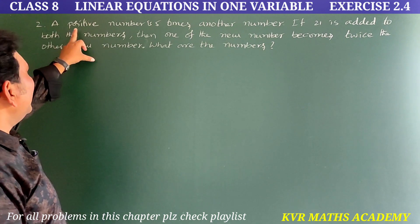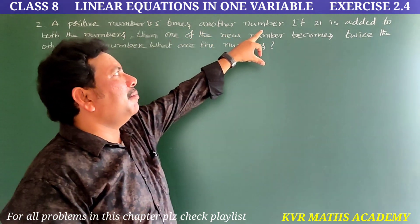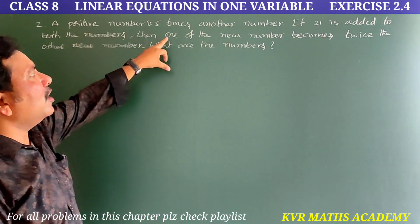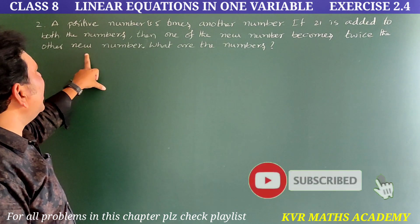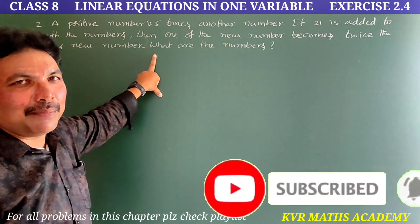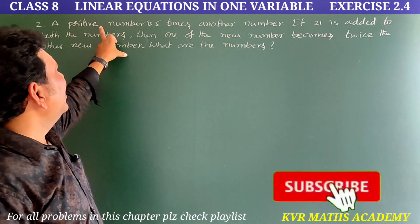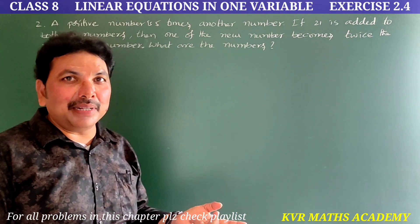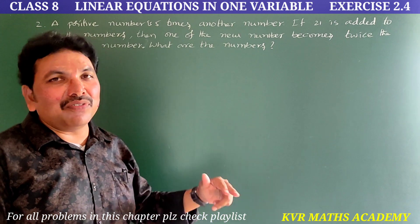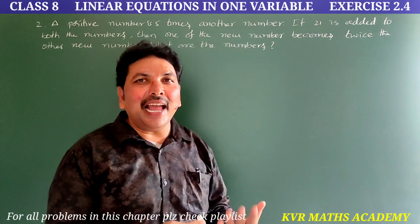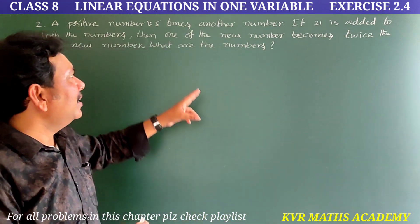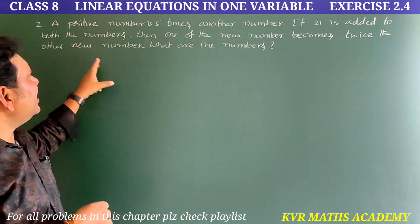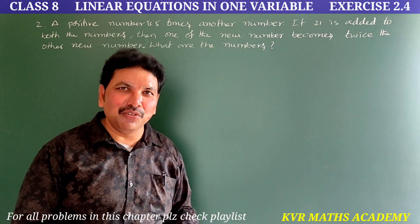Second question. A positive number is 5 times another number. If 21 is added to both the numbers, then one of the new numbers becomes twice the other new number. What are the numbers? There are two numbers — one number is 5 times the other.